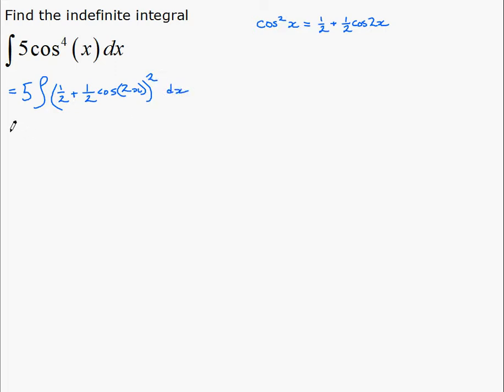So if we expand here now, we get 5 times the integral of 1 over 4 plus 1 half cosine of 2x plus 1 quarter cosine squared of 2x, dx.